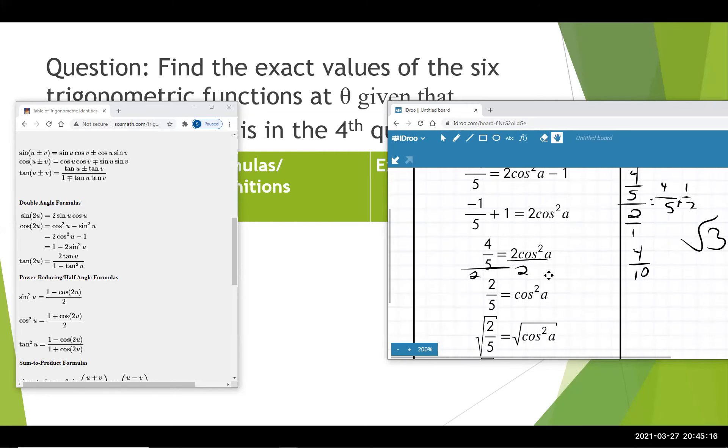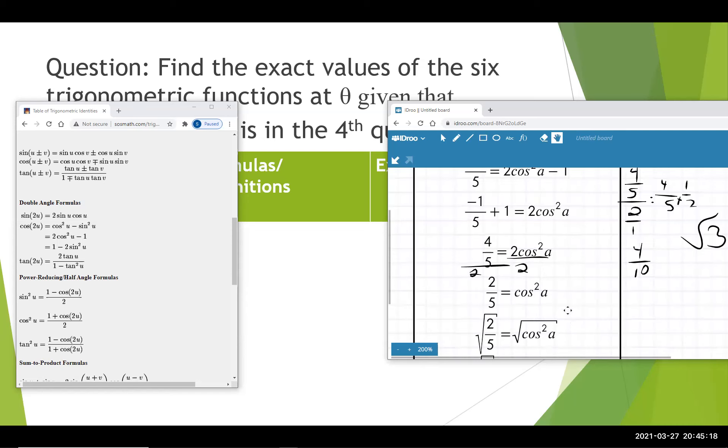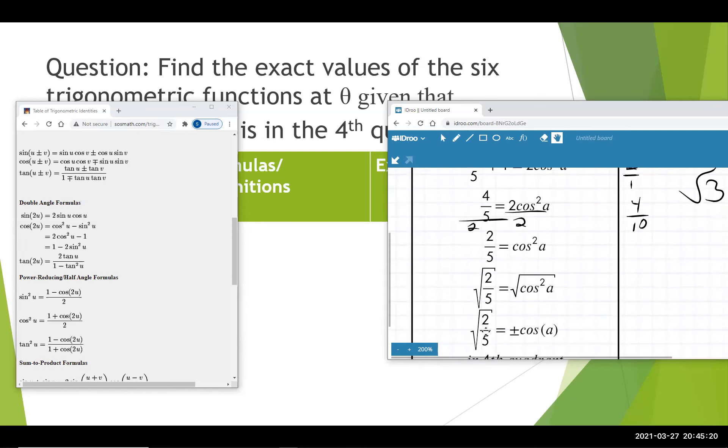Now we're going to take the square root of both sides. Keep that square root there, don't change it to a decimal. And remember, anytime you take a square root, it's going to be a positive or a negative value.